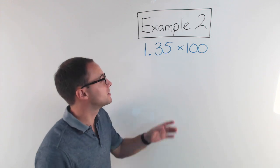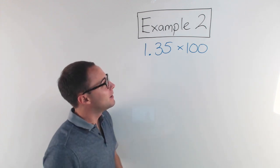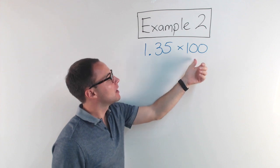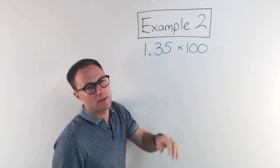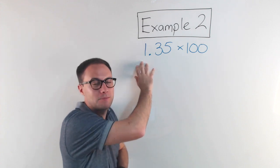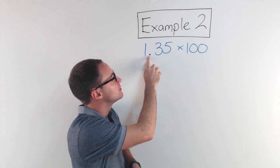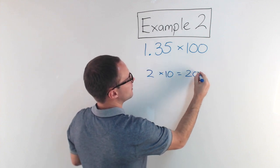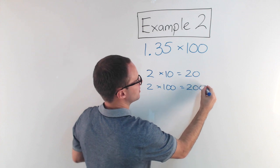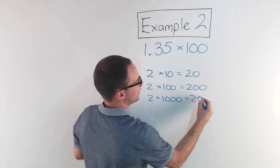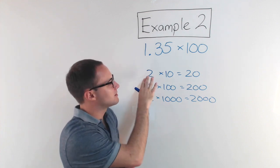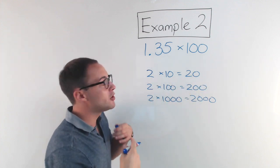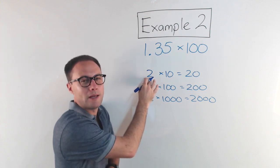All right, here's example number two: 1.35 times 100. When you're multiplying by powers of 10, like 100 is—it's 10 times 10, right, or 10 squared—there's a really nice shortcut that you can make. If you remember, our whole number system is base 10, it's based on powers of 10. So if you think, well, take it simpler: well, what's 2 times 10? Well, that's just 20. 2 times 100? That's 200. 2 times a thousand? That's 2000. Okay? That's very simple because it's just a whole number. All you do is add zeros at the end, right? You do the 1 times the 2 and then add however many zeros you have.